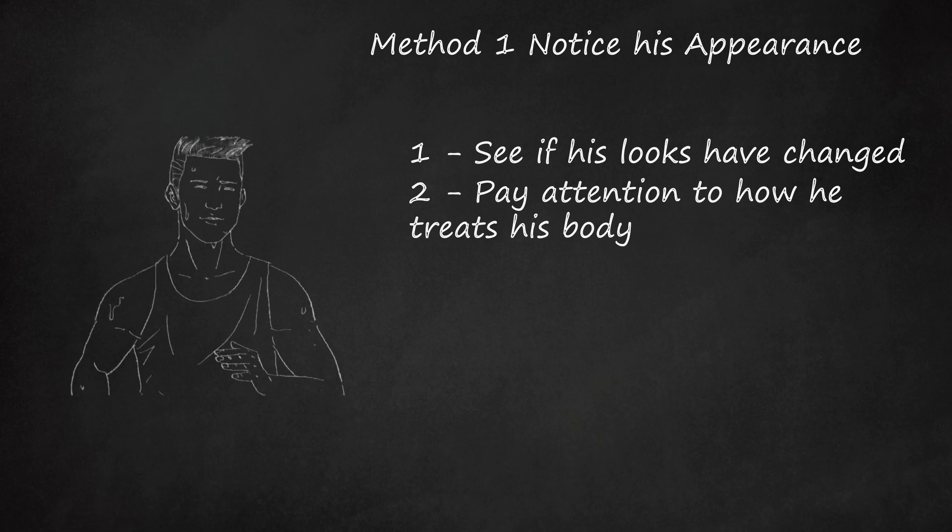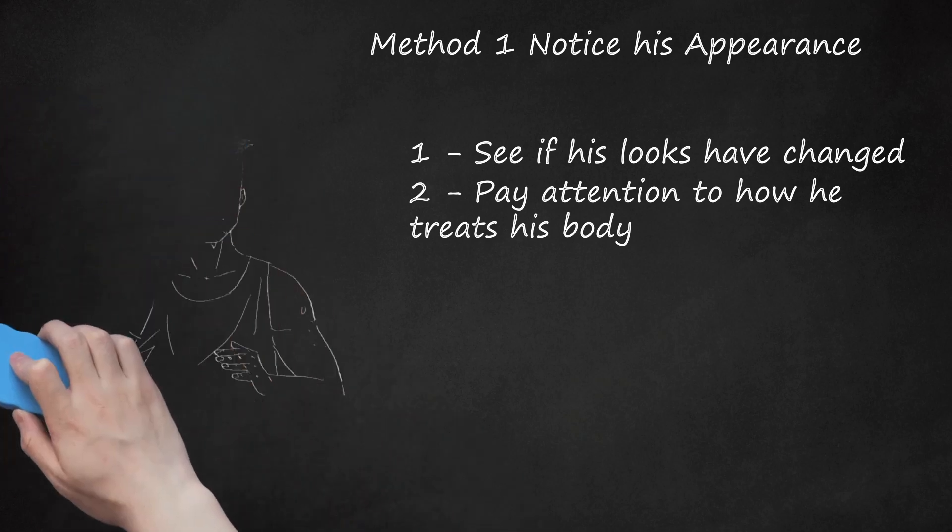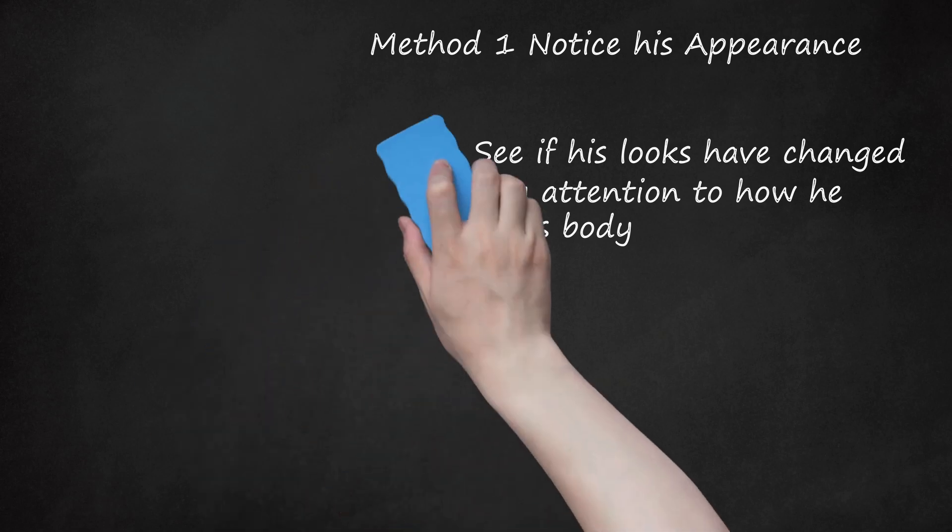Here are some signs. If he's suddenly working out all the time and cares a great deal about his appearance. Remember that going to the gym could also just be another excuse for seeing his lady. If he's dramatically changed his diet to be healthier, he could be doing this to impress someone else. If he's weirdly shy with his body around you and doesn't want you to see him with his shirt off, and only wants to have sex in the dark, this could mean that he feels he's being disloyal to his other woman.